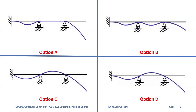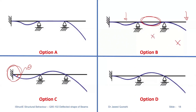Option C is discarded because we have rotation happening here. Rotation is not possible when we have a fixed support. Option B is not possible as well — although we have loading here and loading here, which makes sense, but we have nothing in between, so this should not go down. There's no reason for that, so this is wrong.